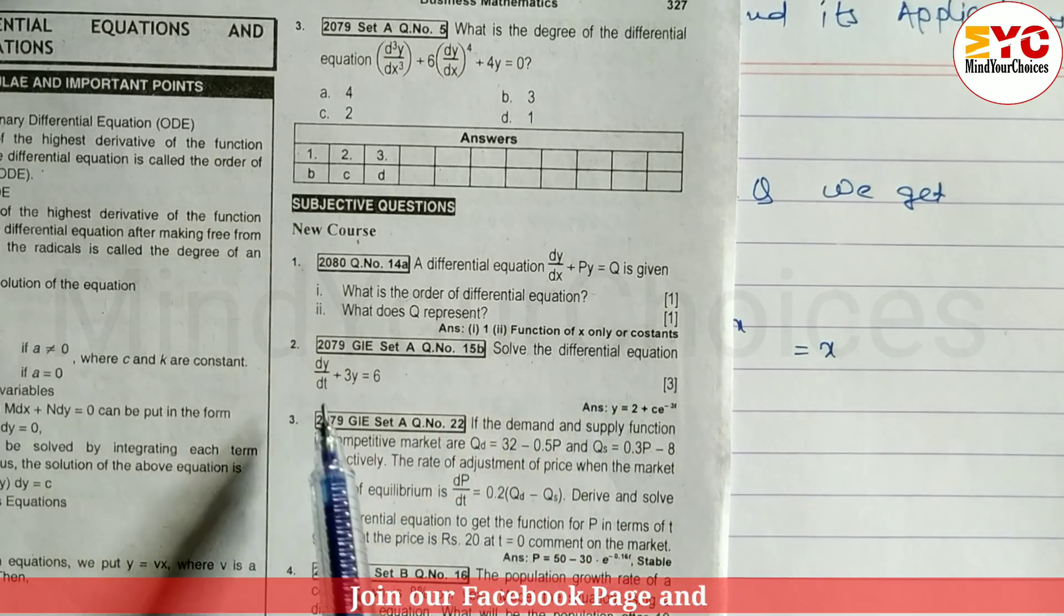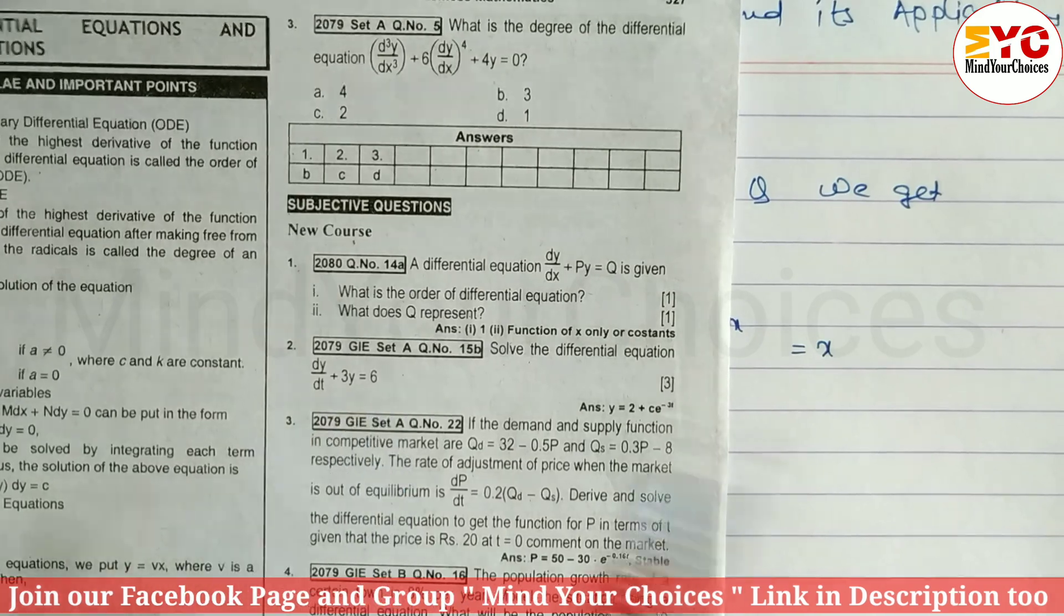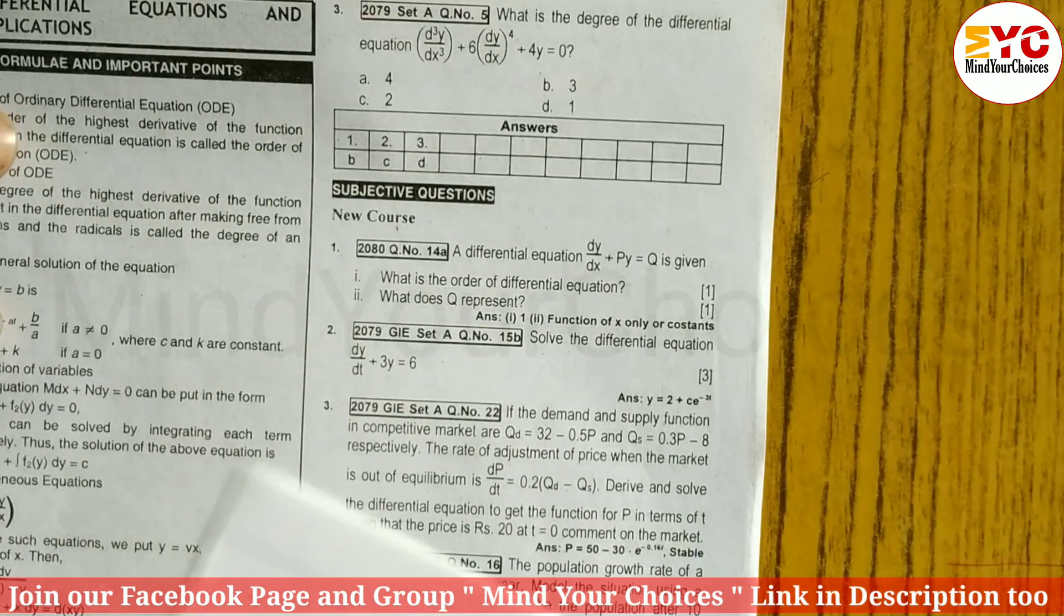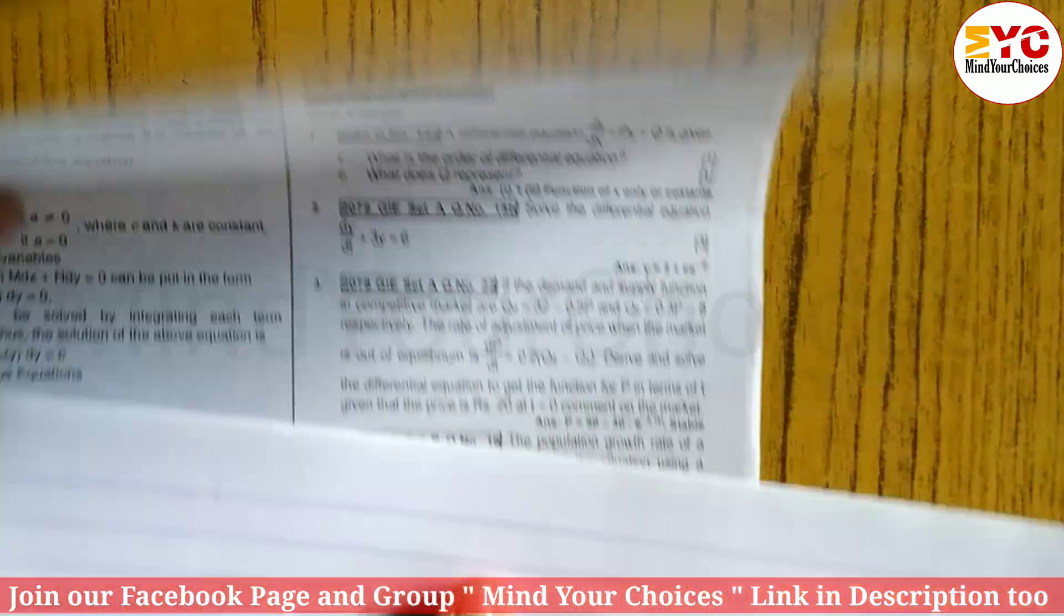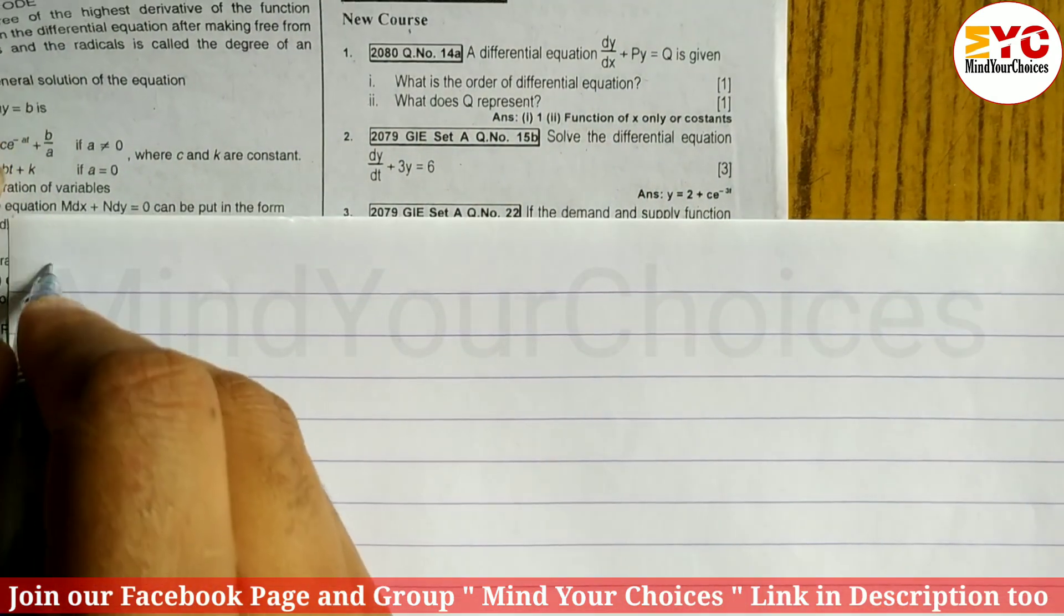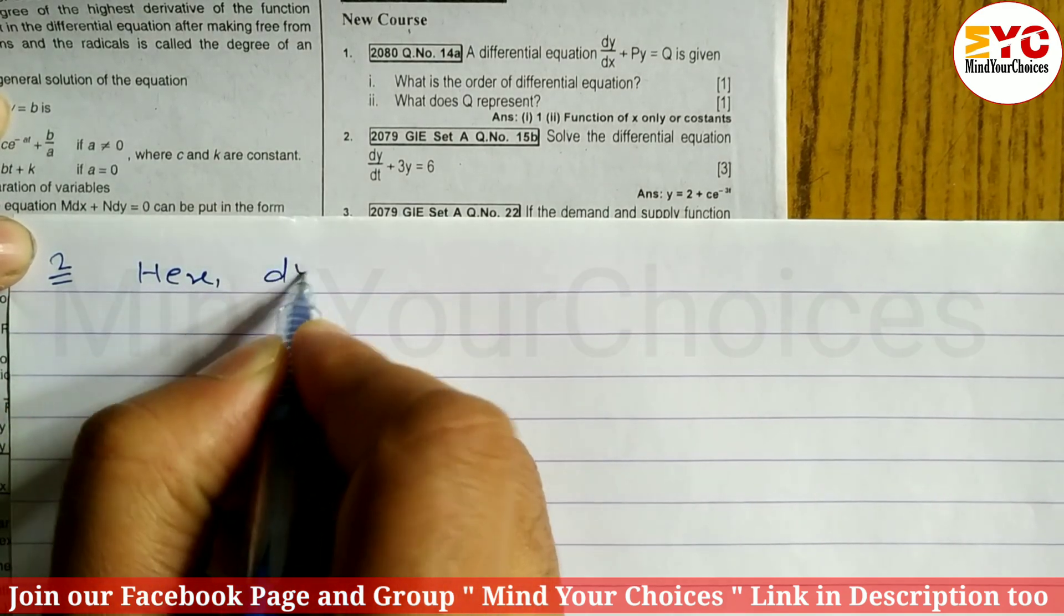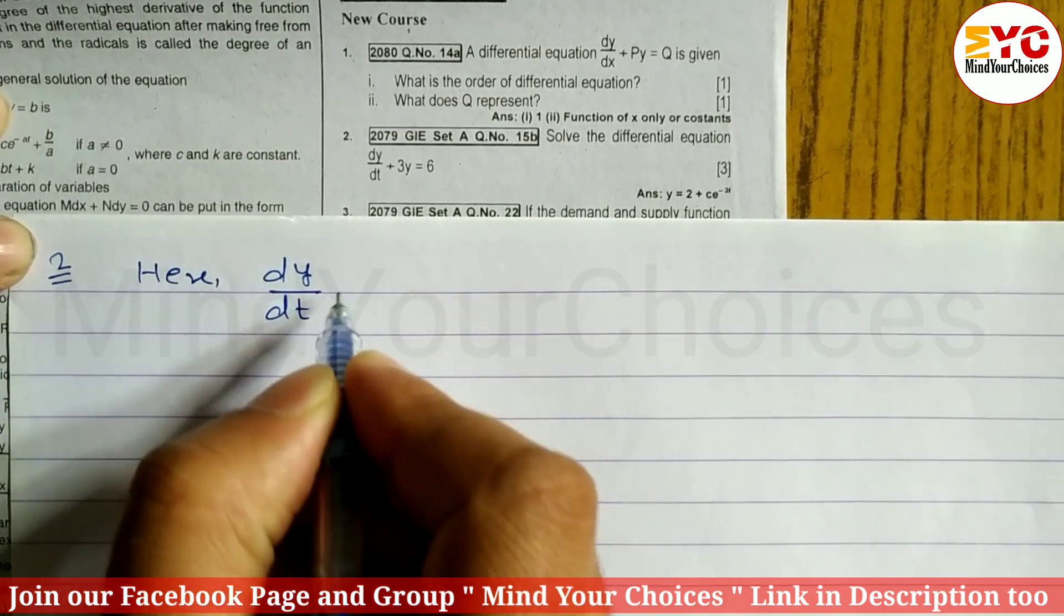Equation number 2: Solve the differential equation dy/dx + 3y = 6. Solve means we have to find out the value of y. Let's solve this differential equation number 2. Here dy/dt + 3y is equal to 6.